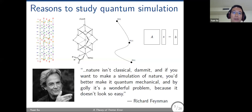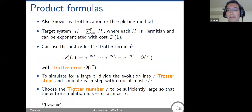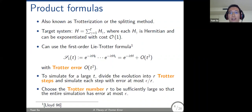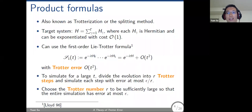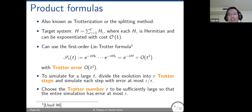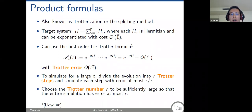There are many algorithms to simulate Hamiltonians on a quantum computer, but perhaps the most straightforward approach is based on product formulas. Depending on who you're talking with, you might hear different names — physicists call it trotterization, while people in mathematics call it operator splitting. The assumption here is that we have a target Hamiltonian given as a linear combination of terms, where each term is Hermitian and can be exponentiated with constant cost on a quantum computer.